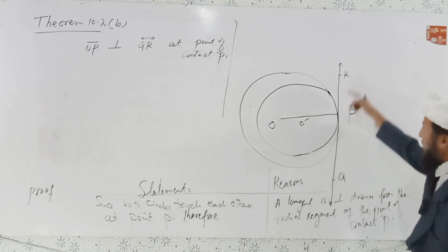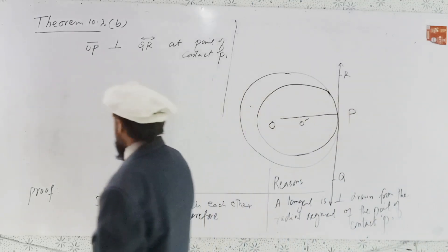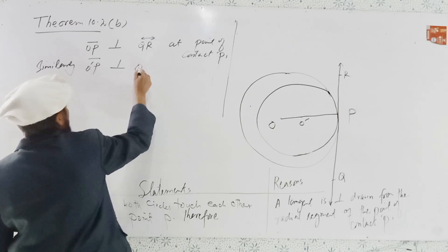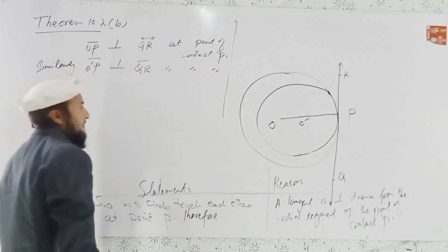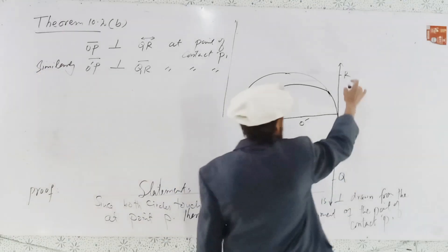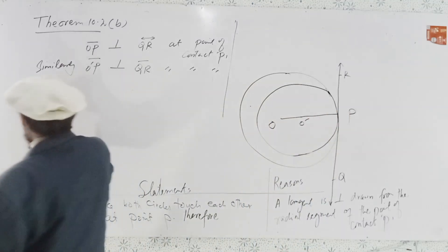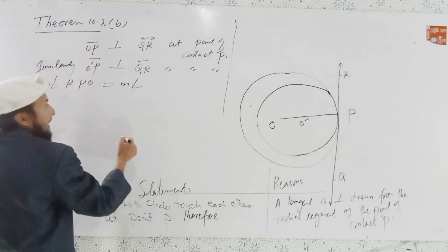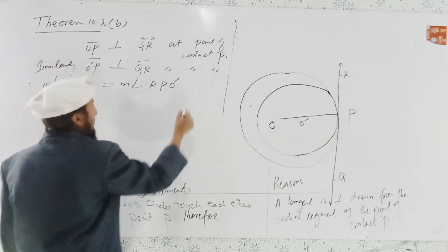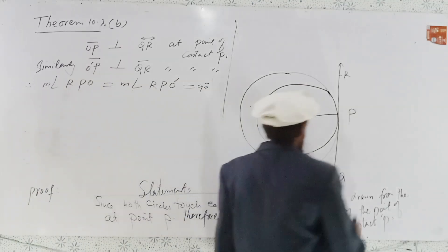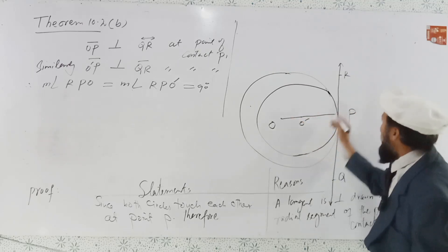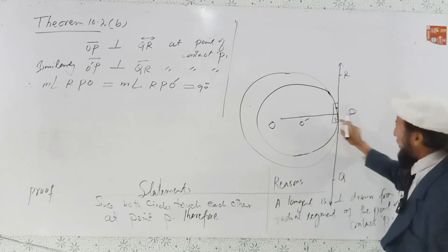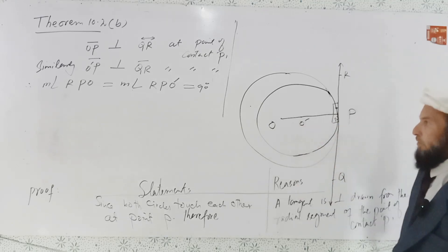The point of contact is P, which lies on this line. Similarly, O dash P is perpendicular to QR at the same point of contact. This means angle RPO is a right angle. Measurement of angle RPO equals measurement of angle RPO dash — each is a right angle, that is 90 degrees. So both give the same result.